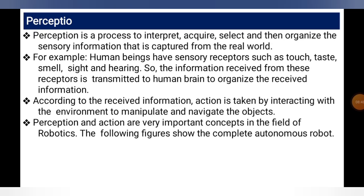Perception is a process of interrupting, acquiring, selecting, and organizing sensory information captured from the real world. Human beings have sensory receptors such as touch, taste, smell, sight, and hearing. The information received from these receptors is transmitted to the human brain to organize the received information. According to the received information, action is taken by interacting with the environment and navigating or manipulating objects.